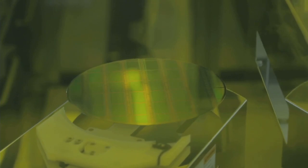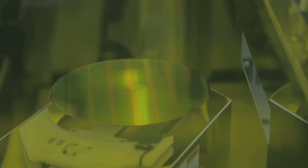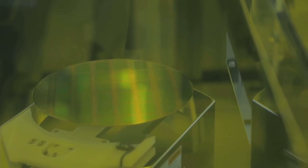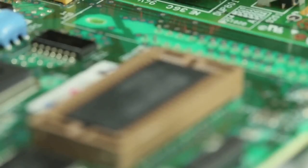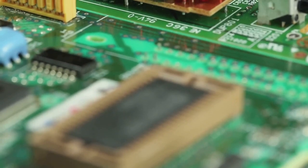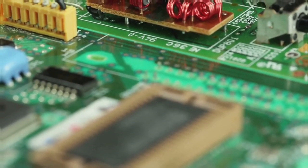Semiconductors are materials that sit between conductors and insulators, and their unique properties make them perfect for controlling electrical current. So buckle up as we journey through the fascinating world inside these micro-marvels.